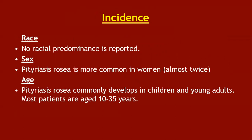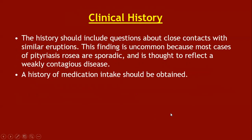No racial predominance is reported. Pityriasis rosea is more common in women — almost twice as common. Most patients are aged 10 to 35 years. The clinical history should include questions about close contact with similar eruptions, though this finding is uncommon because most cases are sporadic and reflect a weakly contagious disease. A full history of medication intake should also be obtained.